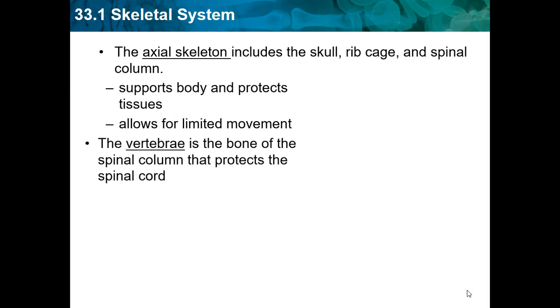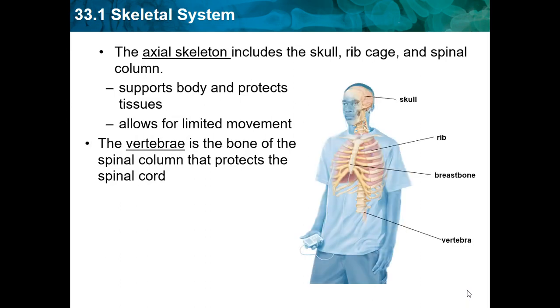The vertebrae is the bone of the spinal column that protects your spinal cord. The axial skeleton includes the skull, the ribs, the breast bone, and the vertebrae.